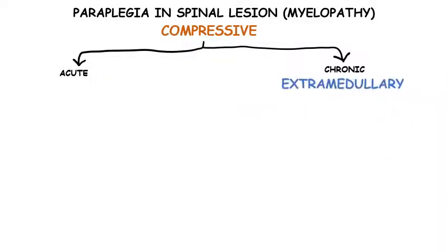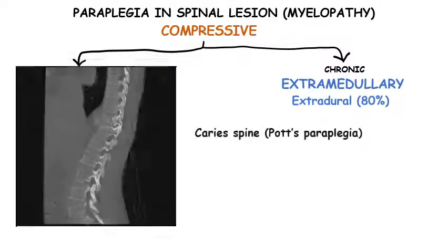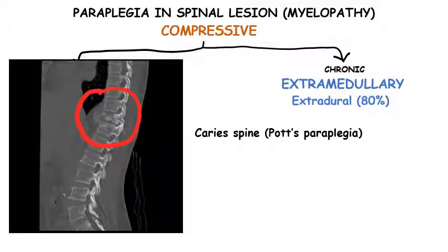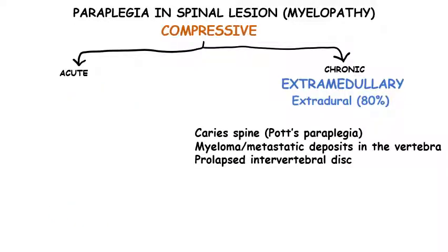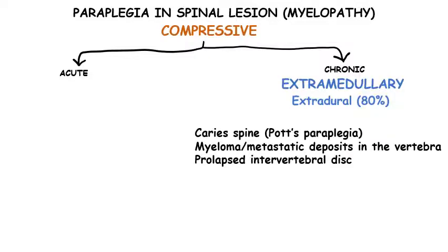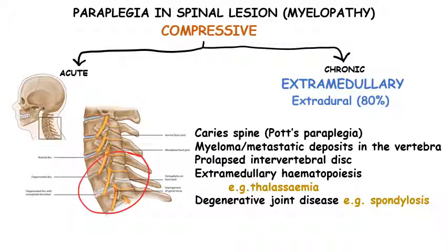Finally, extramedullary extradural causes constitute the majority of cases, about 80% of chronic compressive myelopathy. Here the problem lies outside the dural covering of the spinal cord but inside the vertebral column. One of the most common causes is tuberculosis of the spine, leading to Pott's paraplegia. There may also be myeloma or metastatic deposits in the vertebra, prolapsed intervertebral discs, extramedullary hematopoiesis in diseases like thalassemia causing bony compression of the cord, and spondylosis — slow degeneration of the vertebral column — which can also be responsible for paraplegic features.